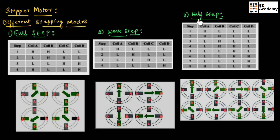The next stepping mode is half step, which is a combination of both full step and wave step. In step 1, only 1 coil is energized; in step 2, 2 coils are energized; in step 3, only 1 coil; and in step 4, 2 coils. When coil A is high, the rotor moves towards coil A. When coils A and B are high, the rotor moves in between coil A and B. When coil B is high, the rotor moves towards coil B. And when coils B and C are high, the rotor is between coil B and C. This process continues — these are the different stepping modes in stepper motor.